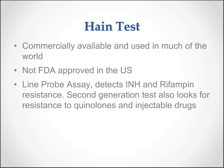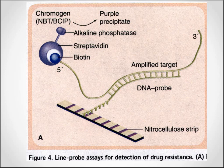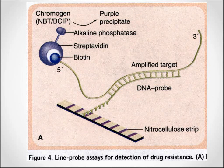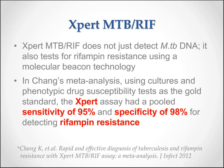The Hain test is commercially available and used in much of the world, but it is not FDA approved in the United States. It is a line probe assay that detects INH and rifampin resistance, and the second generation test also looks for resistance to quinolones and injectable drugs. Results show bands on a nitrocellulose strip — absence of a band suggests the presence of a mutation. The GeneXpert MTB/RIF not only detects MTB DNA but also tests for rifampin resistance using molecular beacon technology. In Chang's 2012 meta-analysis, using cultures and phenotypic drug susceptibility tests as the gold standard, the Xpert assay had a pooled sensitivity of 95% and specificity of 98% for detecting rifampin resistance.